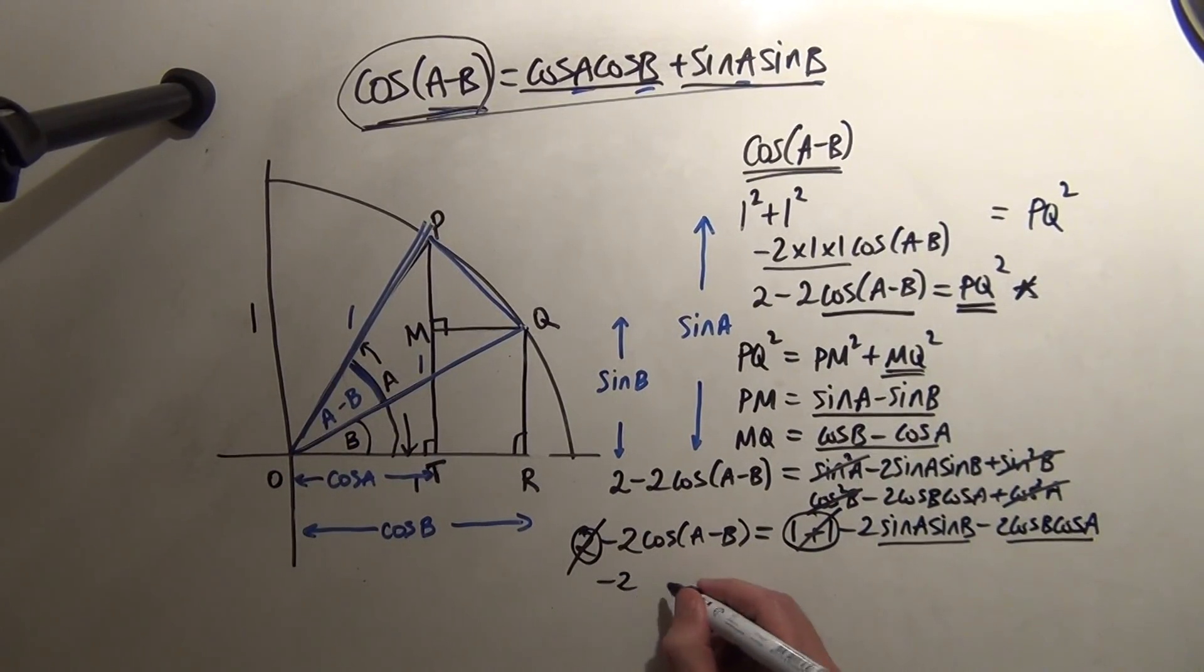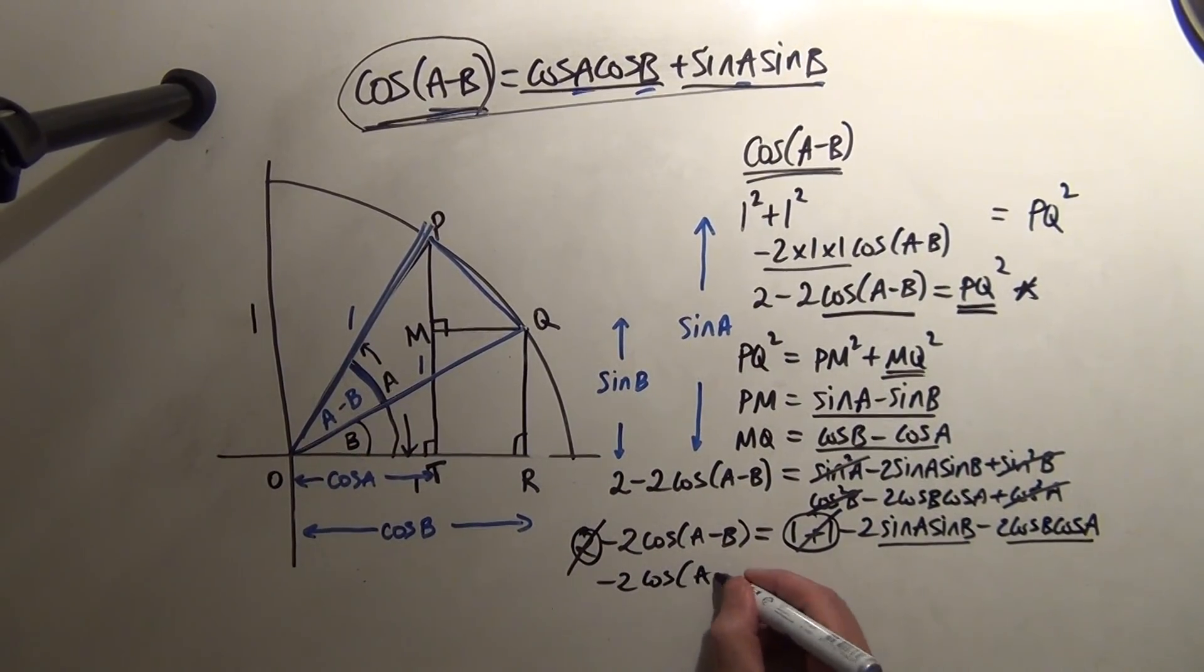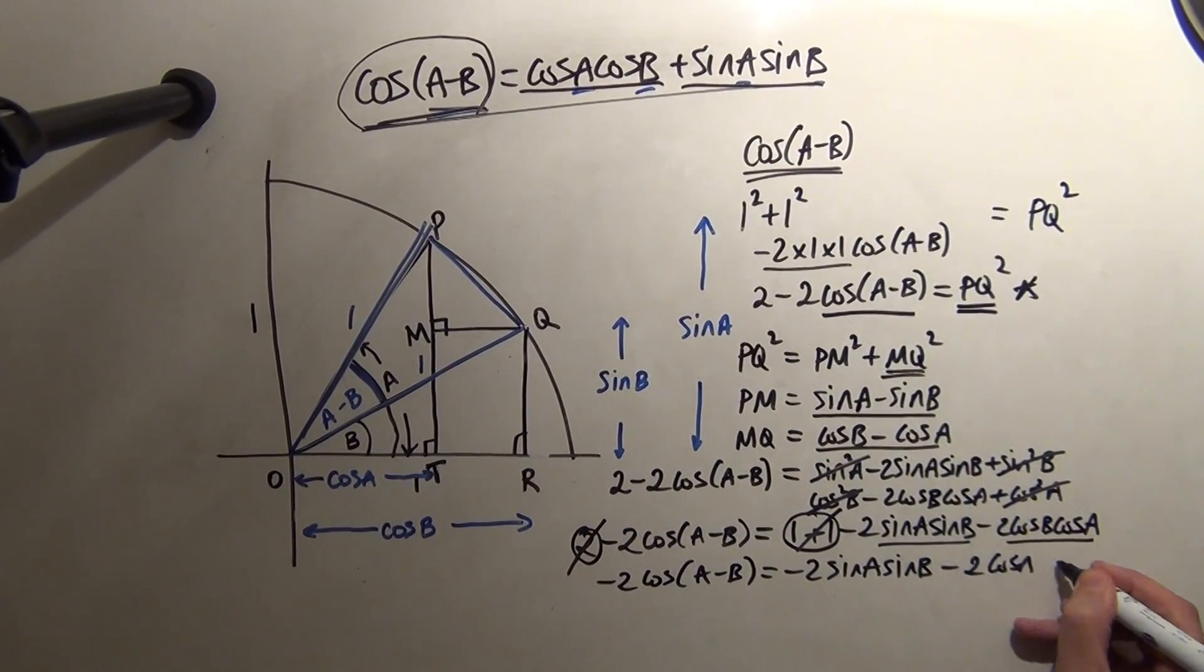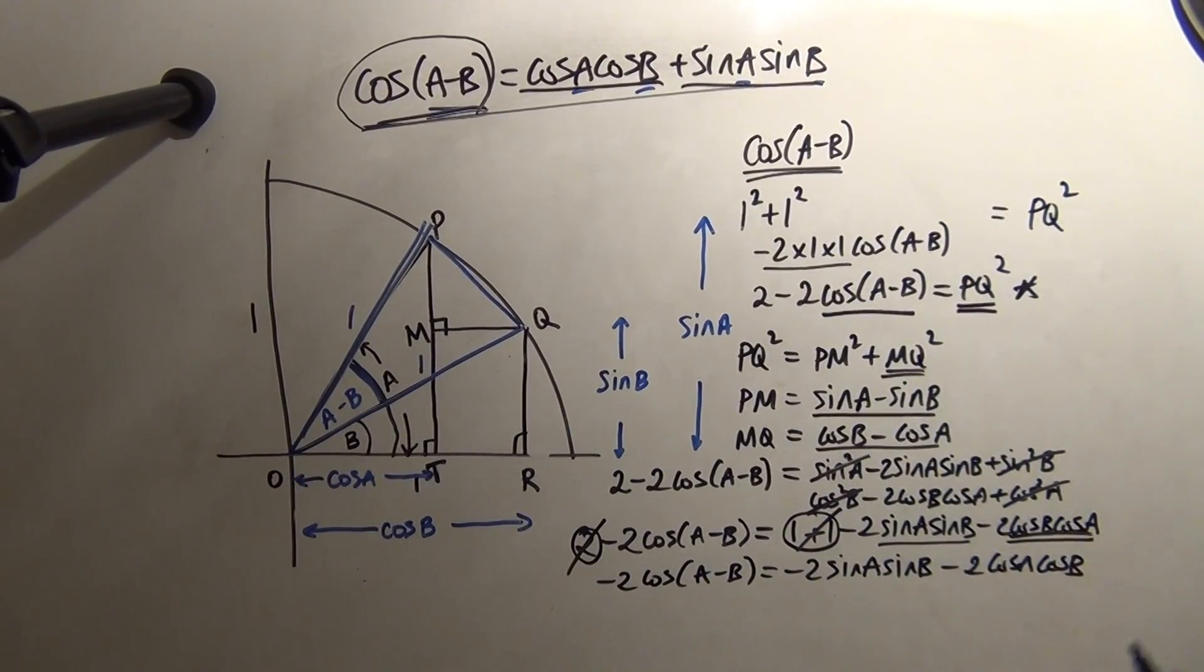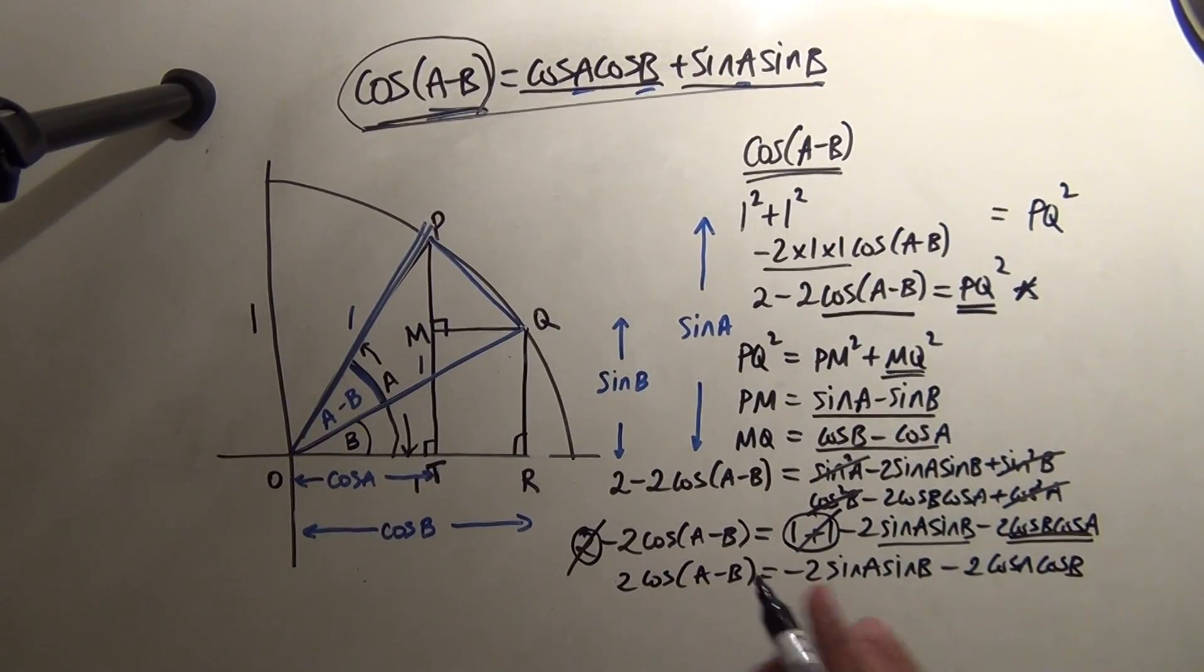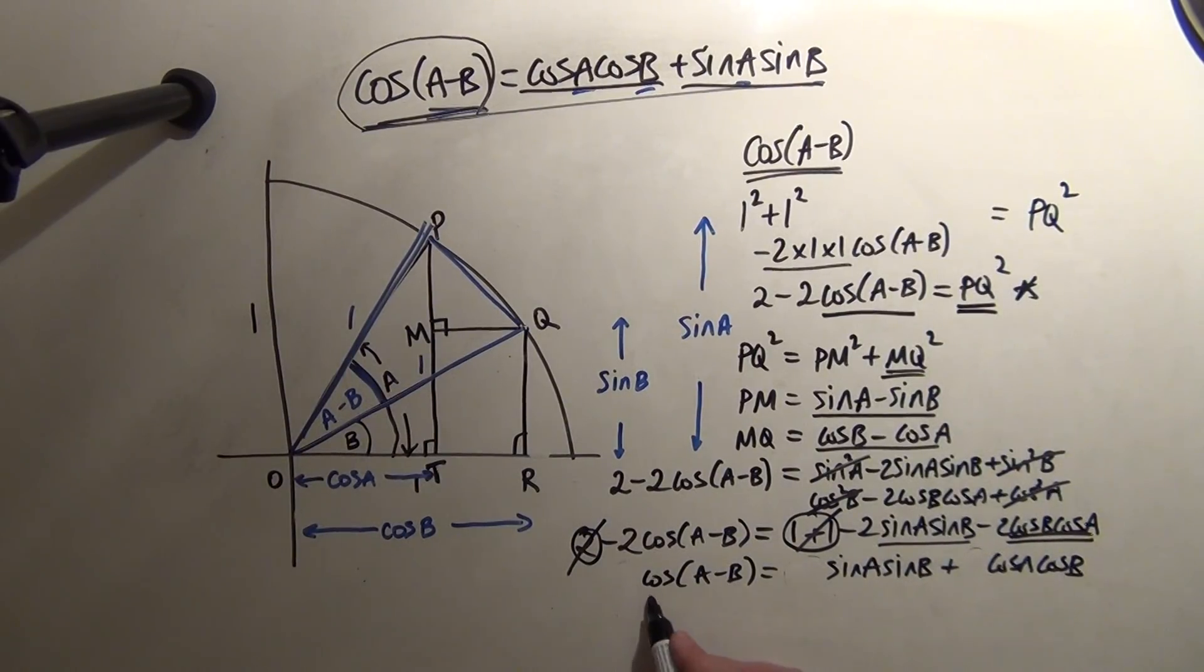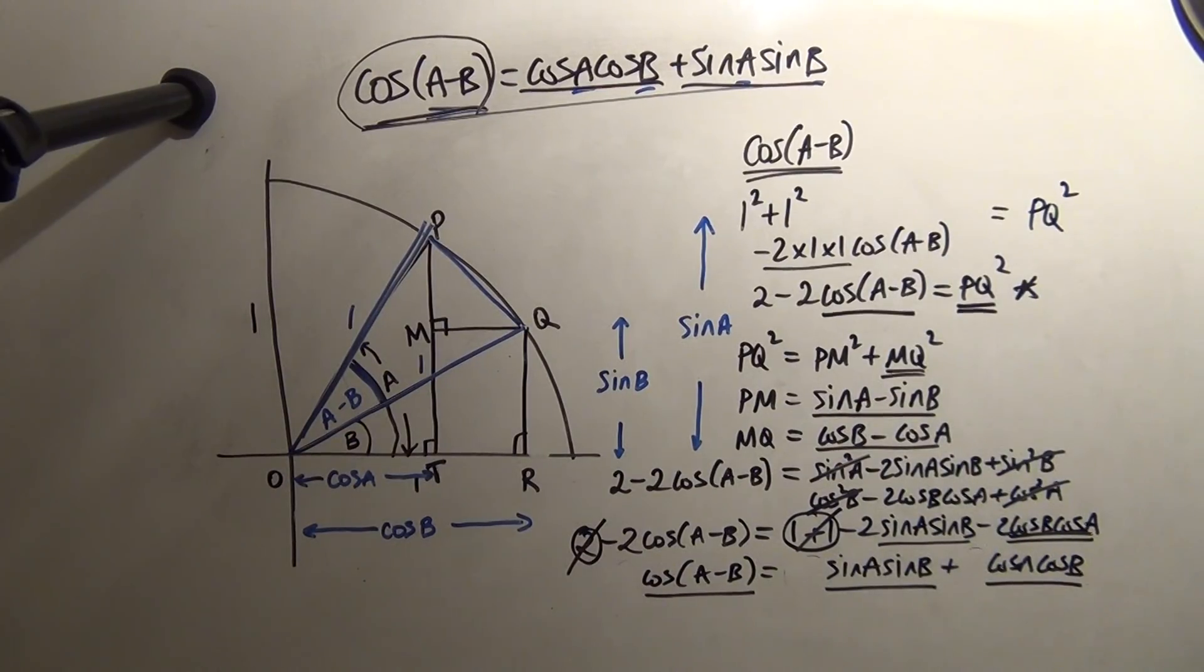So, I'm left with -2cos(A-B) = -2sinAsinB - 2cosAcosB. It's the same as that. And then I'm going to divide everything through by negative 1. And divide everything through by negative 2. And then you can see cos(A-B) = cosAcosB + sinAsinB.